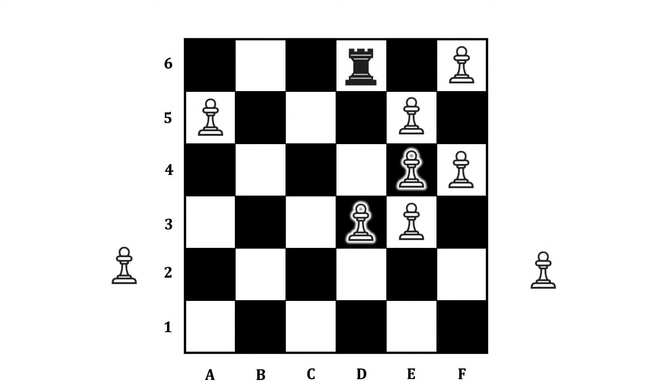Your opponent moving to D6 instead still won't let them win. Now you can move the rook directly to F6 and capture a second pawn, this time winning the game 2-to-1.